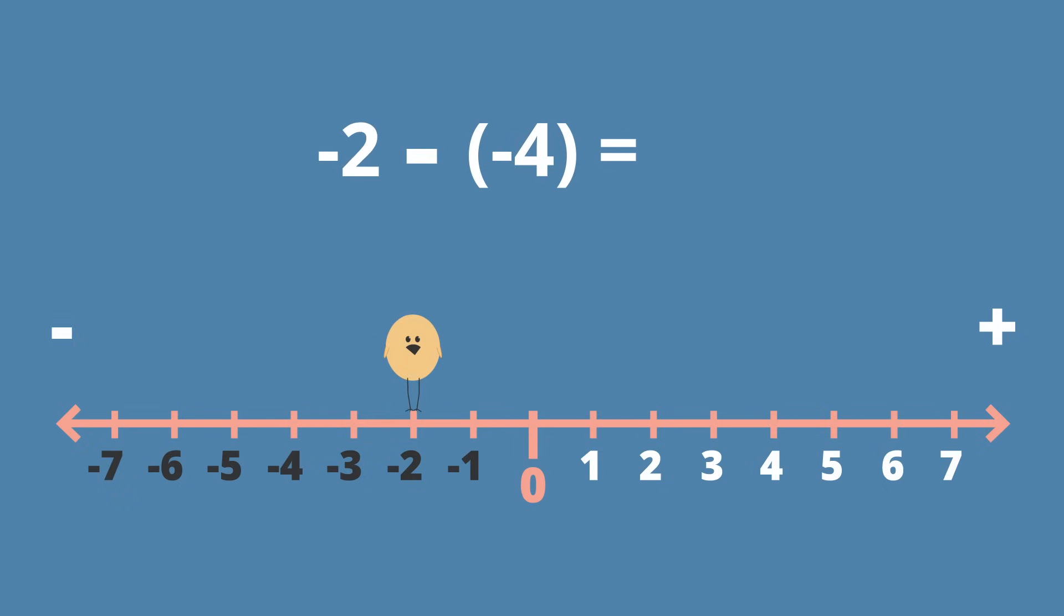Our operation is a minus, so our bird will look left, towards the negative end. Our second number is a negative 4. Therefore, our bird will move backwards 4 spaces. Our bird landed at positive 2, and that's our answer. Negative 2 minus negative 4 equals 2.